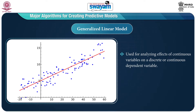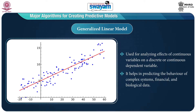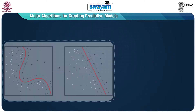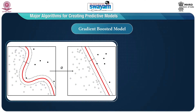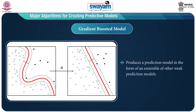The second algorithm is the generalized linear model — this is used for analyzing the effects of continuous variables on a discrete or continuous dependent variable. It helps in predicting the behavior of complex systems, financial data, and biological data.